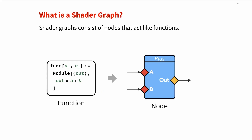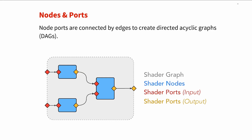So what is a shader graph? A shader graph consists of nodes that act like functions. For example, here we can see a simple function in Wolfram language: it takes two inputs, A and B, and adds them together for a single output called out. The equivalent node would be a plus node with two input ports A and B and one output port called out. Once you have these nodes — which can be as simple as a single plus or as complicated as a full shader — you can combine them into the final shader graph by connecting node ports to each other. They form a directed acyclic graph, or DAG, meaning there are no loops and each output goes into an input, making it very easy to see where things flow.